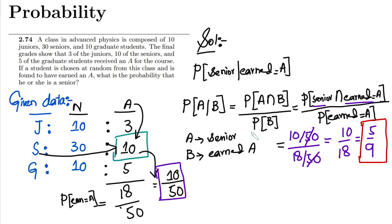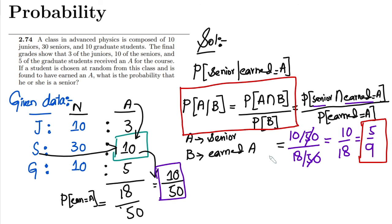That is the solution of our question, in which we have seen the application of conditional probability — how easy it is to apply it for a given condition and obtain the results. That's it for today, and I will see you with some more interesting stuff in our upcoming video. See you soon!